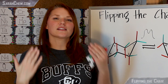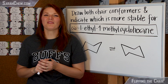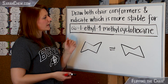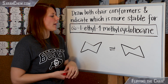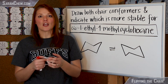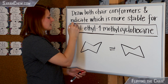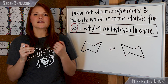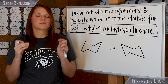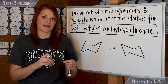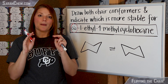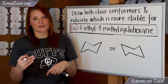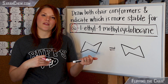Now let's take a look at an example of how we can actually apply these ideas. The question says: draw both chair conformers and indicate which is more stable for cis-1-ethyl-4-methylcyclohexane. The first thing to point out is that this question specifies cis, which has really important implications for how you draw. Cis means the substituents need to be on the same side — both either up or both either down — and it does not have to do with them being equatorial or axial.